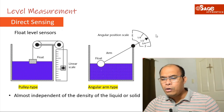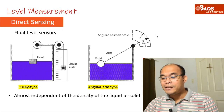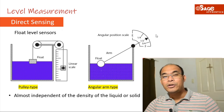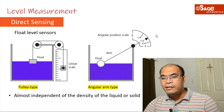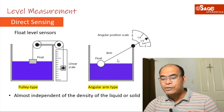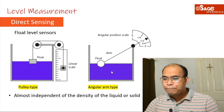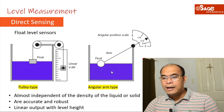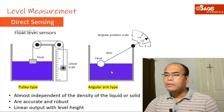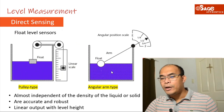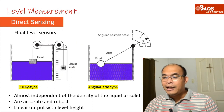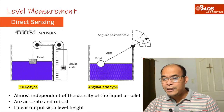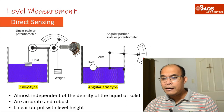Float level sensors are almost independent of the density of the liquid or solid — density being mass over volume — so it doesn't matter what the liquid is. They are accurate, robust, and produce a linear output with level height. We can also replace the mechanical indicator with a potentiometer.